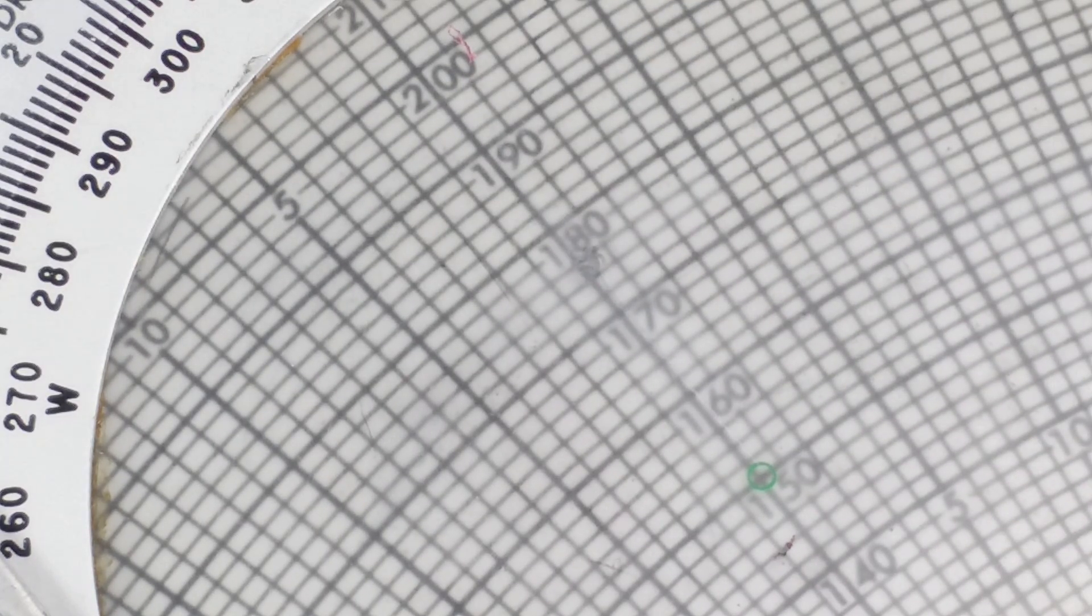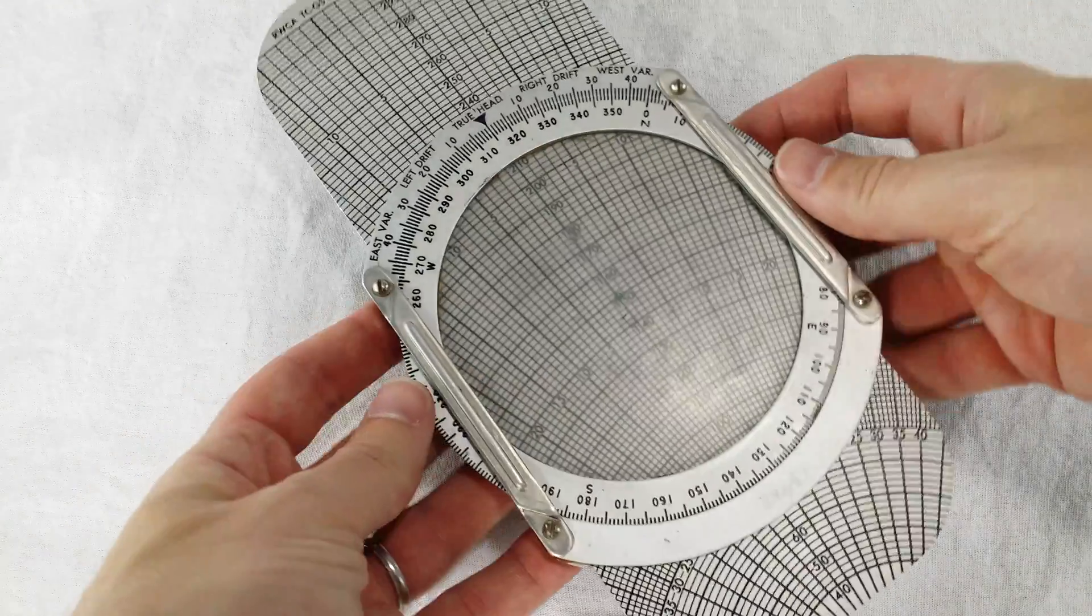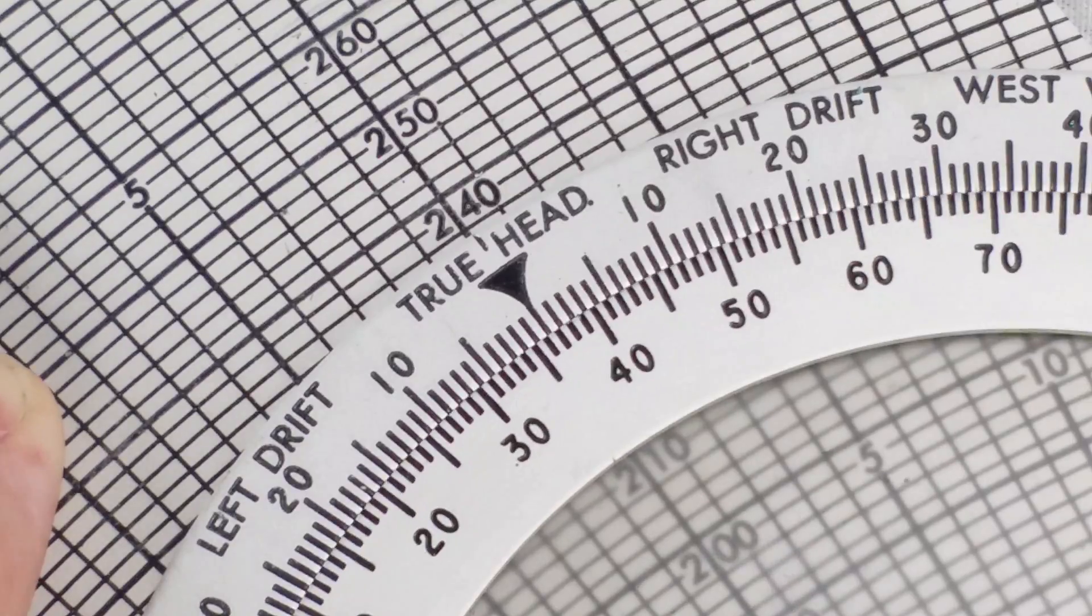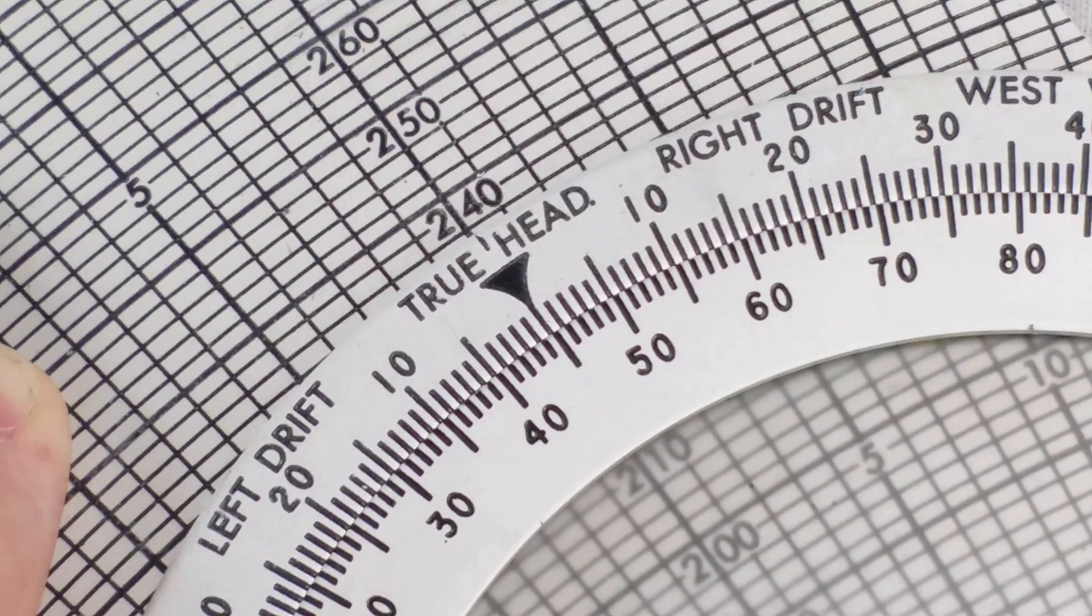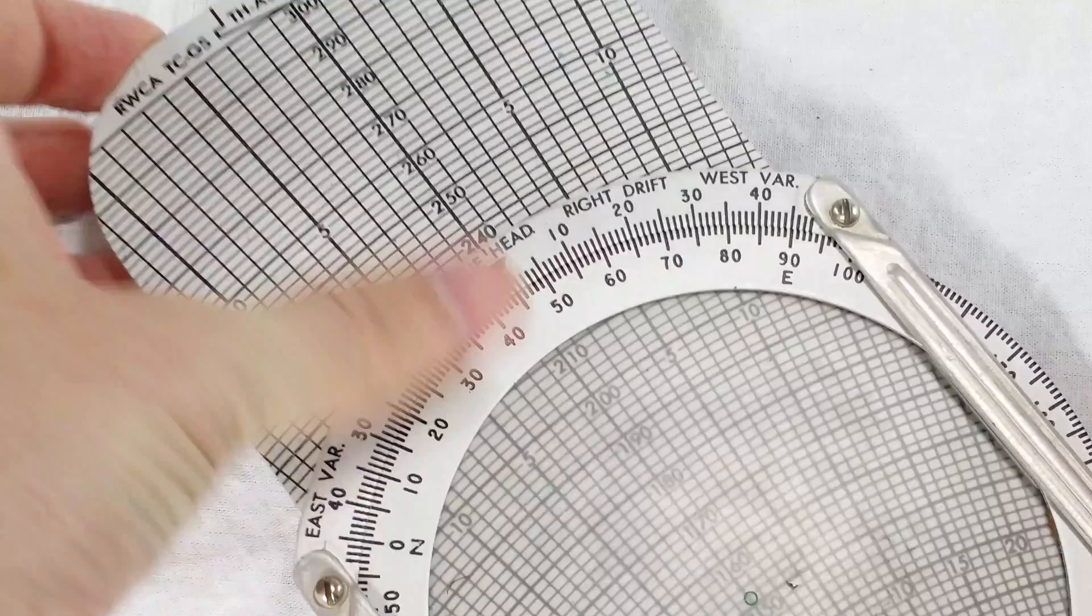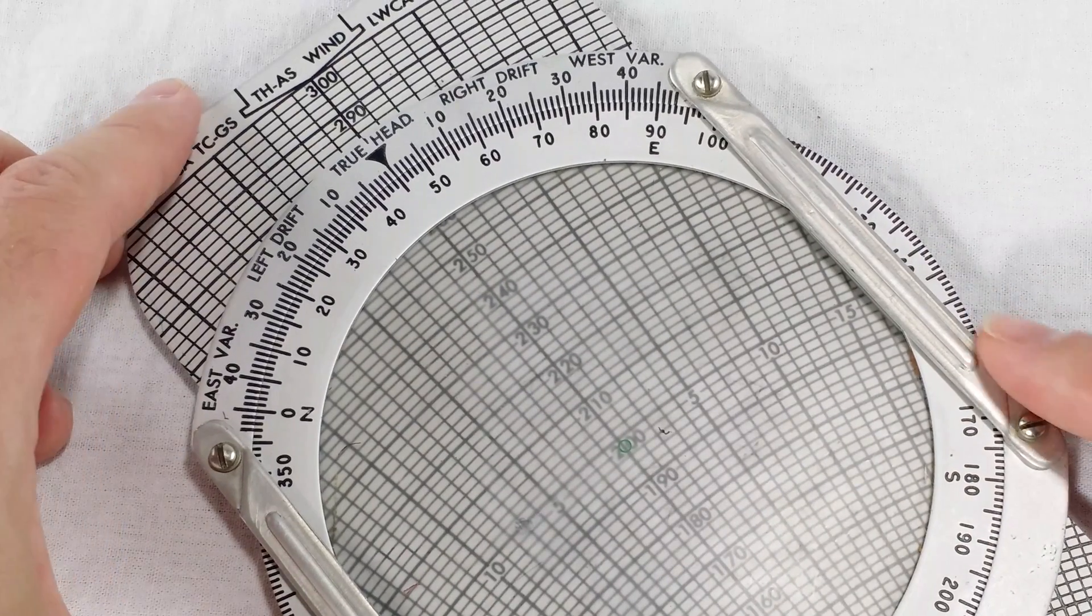All right. Now I've got my wind in there. Now, for the plane's velocity, I'm going to dial in my compass direction first. That's 45 degrees up top, and the speed is 200 knots, so I slide the origin to the 200, and that's about it.